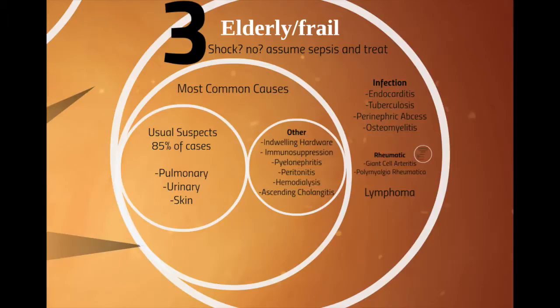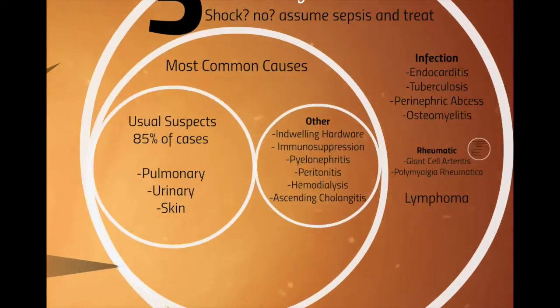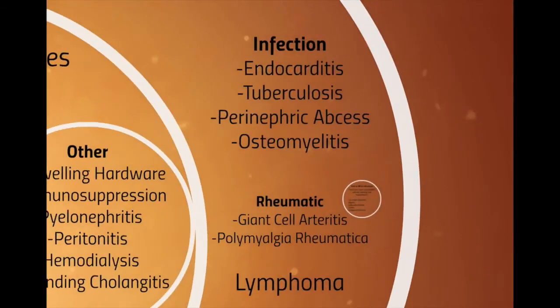If it's not clearly urine, not clearly chest, and you've looked at all the skin, ask yourself: infection, rheum, or lymphoma? Infection sources would be endocarditis, perinephric abscess, osteomyelitis, or tuberculosis. Rheumatologic causes include giant cell arteritis and polymyalgia rheumatica — these are the culprits for elderly patients with fever and are much higher risk than in younger patients. And then lastly, lymphoma.